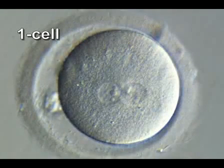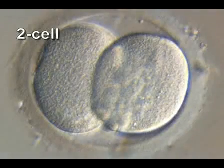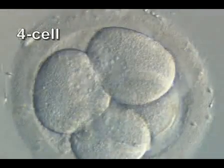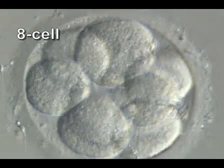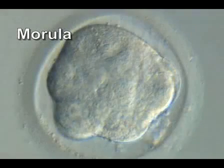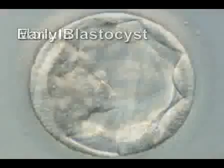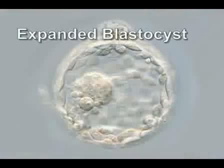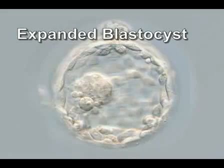We receive embryos at all different stages of development, and we culture them in vitro until they reach the proper expanded blastocyst stage. These are examples of how the embryo develops from the one-cell stage, to the early blastocyst, and then the expanded blastocyst, from which we derive human embryonic stem cells.